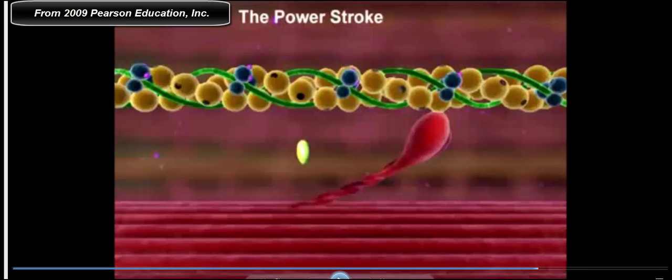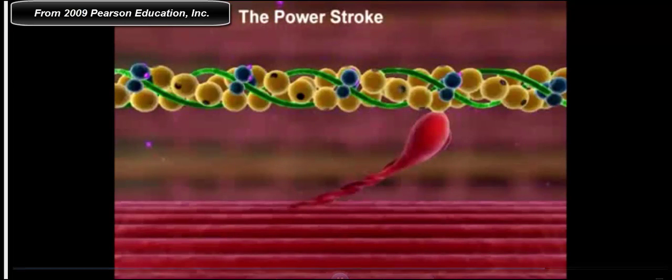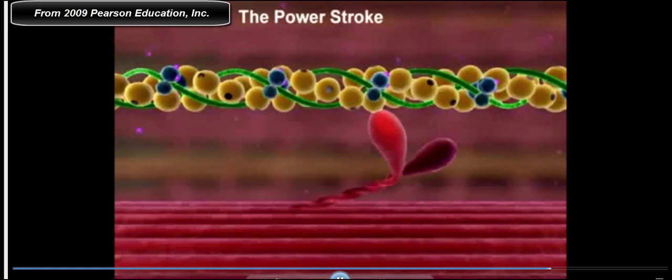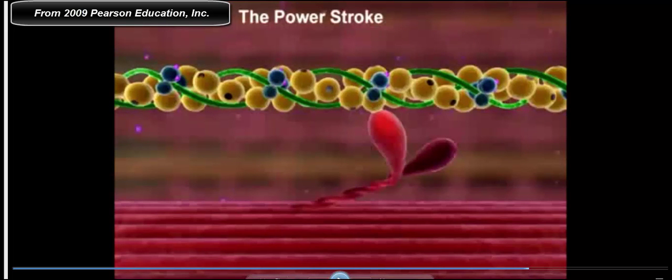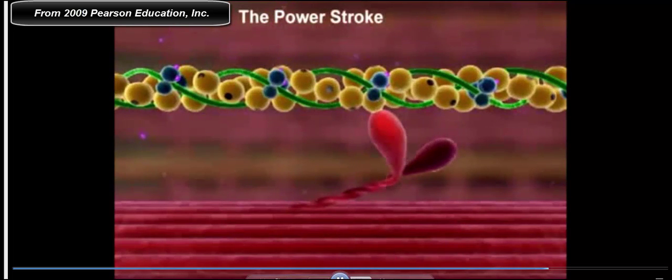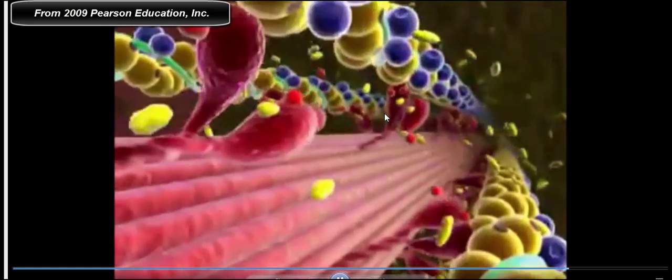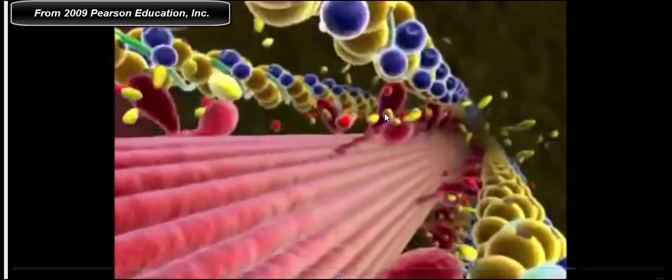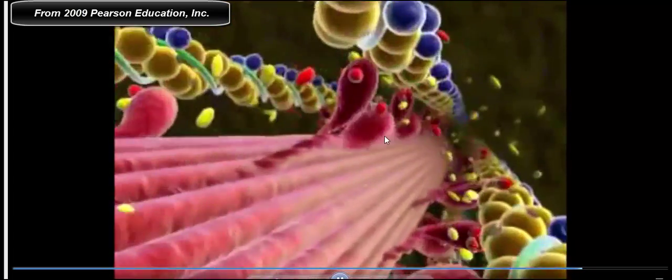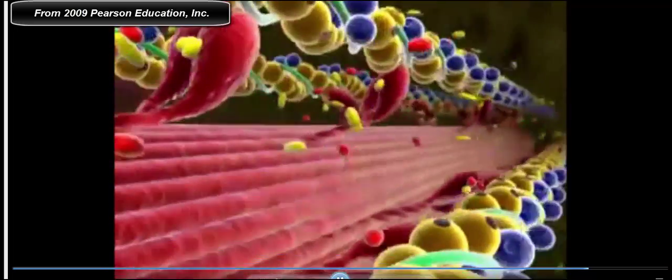We're going to see the power stroke, very strong conformational change of myosin. ADP is going to dissociate. A change in conformation in myosin, a very large one, is going to cause contraction of the myosin head, which ultimately results in thin filament moving toward the M line. You see this here in real time.